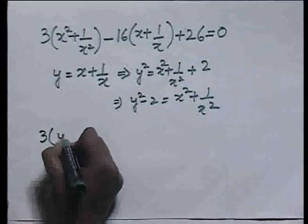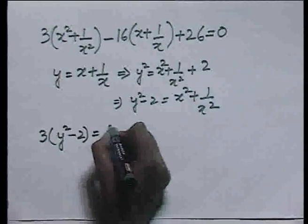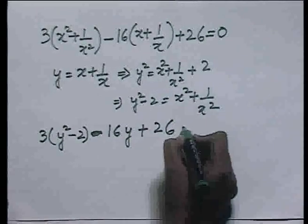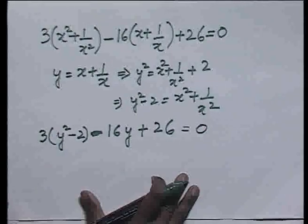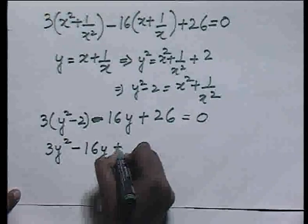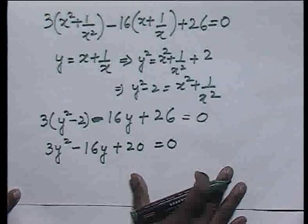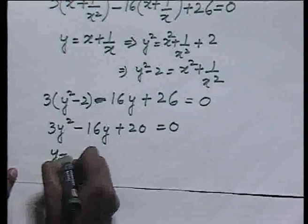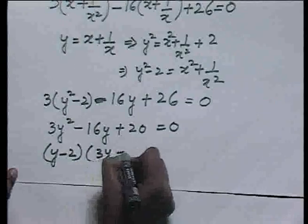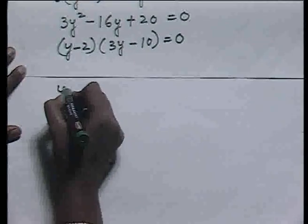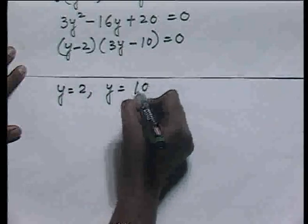Replacing x + 1/x by y and x² + 1/x² by y² - 2, we get 3(y² - 2) - 16y + 26 = 0. Removing the bracket, we get the final equation as 3y² - 16y + 20 = 0. This equation is of quadratic form. The factors will be (y - 2)(3y - 10) = 0, and hence we get two values of y: y = 2 and y = 10/3.